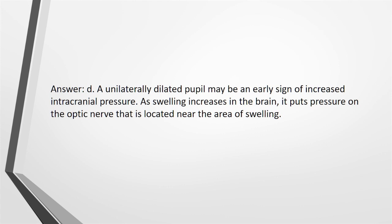Answer: D. A unilaterally dilated pupil may be an early sign of increased intracranial pressure. As swelling increases in the brain, it puts pressure on the optic nerve that is located near the area of swelling.